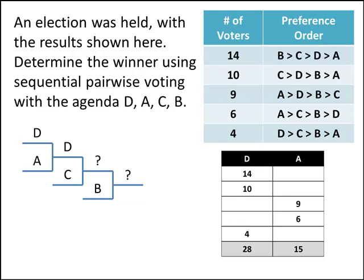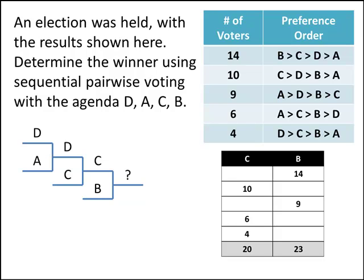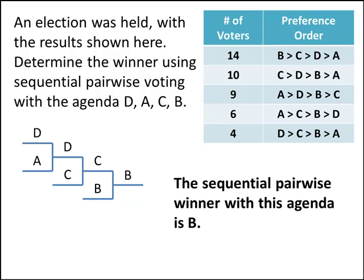Now we have a D versus C matchup. Looking through our profile, we can figure out that C is going to beat D 30 to 13. So C moves on to face B in the final round. In the C versus B election, we can go through our profile and determine that B beats C 23 to 20. So B is the winner of our election using this agenda.